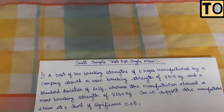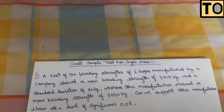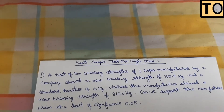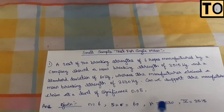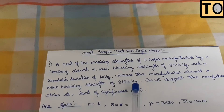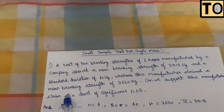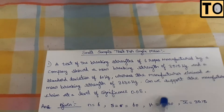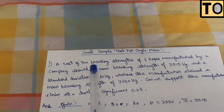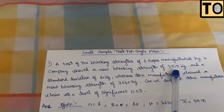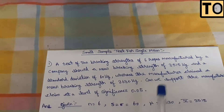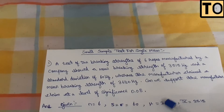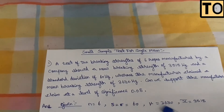Given: n equal to 6 ropes, standard deviation S equal to 60, mu equal to 3630 kg — that is the total breaking strength the company is claiming. X bar, the mean breaking strength, is 3515 kg. So mu equal to 3630 is claimed by the company, and X bar equal to 3515.